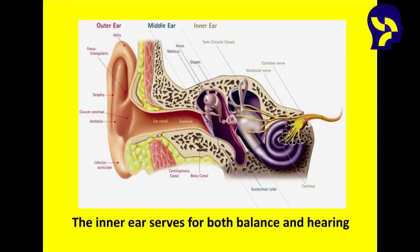The eustachian tube's function is to equalize the air inside the middle ear and to provide a fresh oxygen supply into the middle ear mucosa. The inner ear can be thought of as two organs: the semicircular canals, which are the body's balance organ, and the cochlea, which serves as the ear's microphone, converting sound waves into electrical impulses which transmit to the brain.